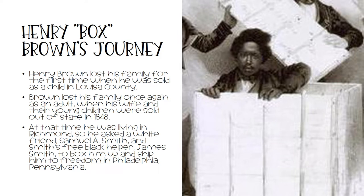Henry Brown lost his family twice in his lifetime. First, he was sold as a child in Louisa County after his master had died. He lost his family once again as an adult when his wife and their young children were sold out of state in 1848. At that time, he was living in Richmond and he asked a white friend, Samuel A. Smith, and Smith's free black helper, James Smith, to box him up and ship him to freedom in Philadelphia, Pennsylvania. This is how he earned his nickname, Henry Box Brown.